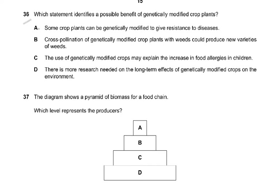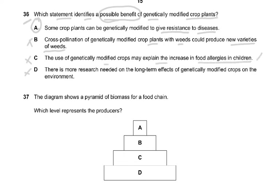Question 36: which statement identifies a possible benefit of genetically modified crop plants? Some crop plants can be genetically modified to give resistance to disease, resulting in more crop yield — that is the benefit, so the answer is A. The other options describe drawbacks: cross-pollination with weeds could produce rampant new weed varieties; GM crops may explain increased food allergies in children; and more long-term research is still needed on environmental effects.